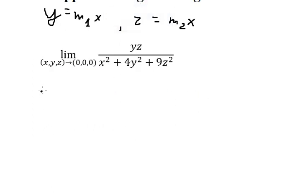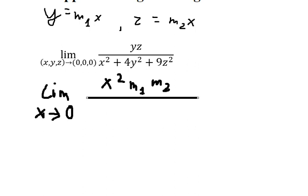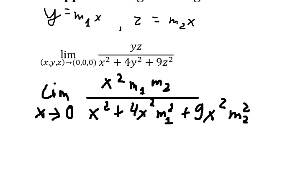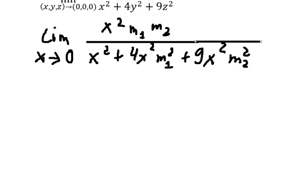And then that should be like this. This one we have x² times m₁m₂ over x² and we have 4x²m₁² and 9x²m₂². So we need to simplify x² on numerator and denominator.